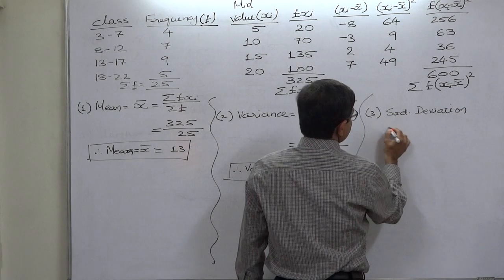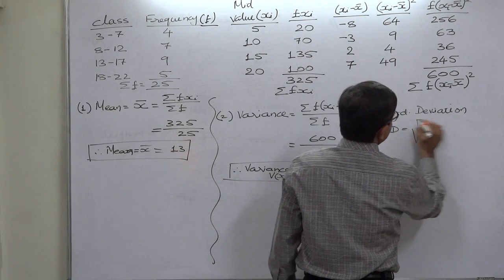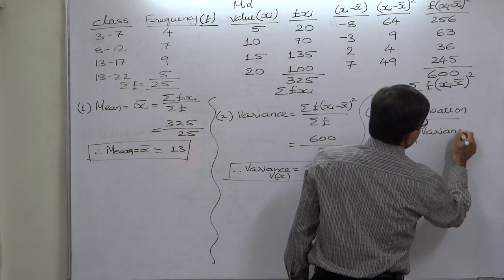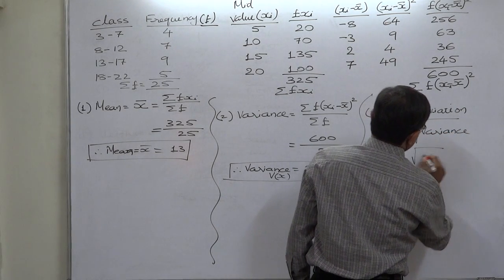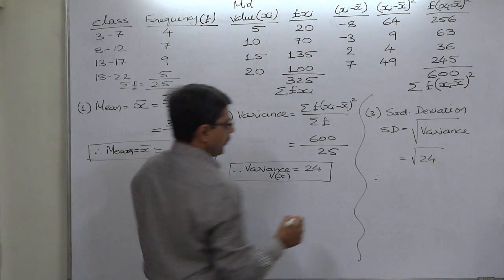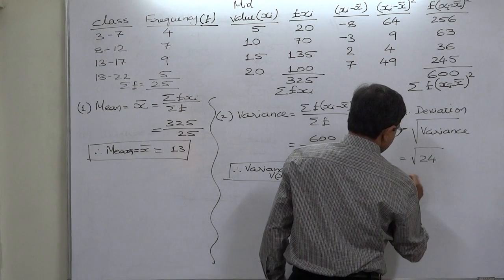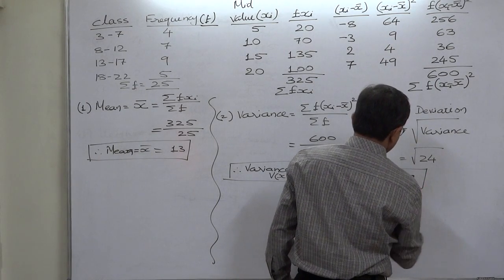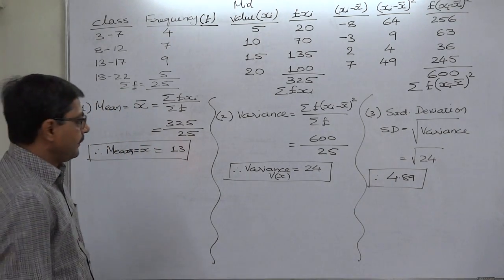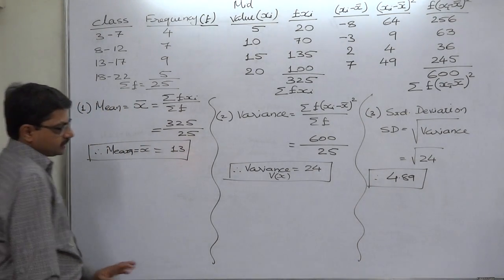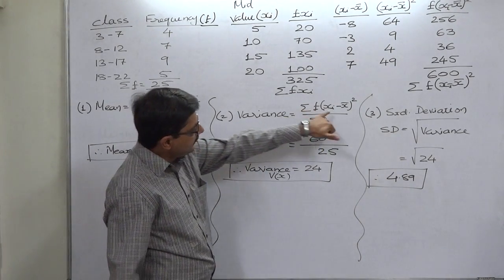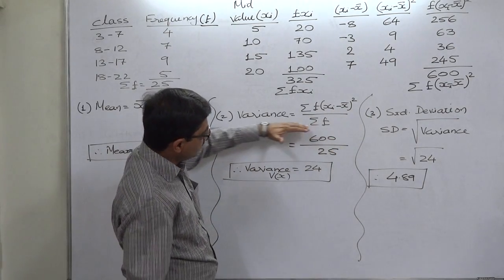And now we can calculate standard deviation. The standard deviation is the square root, or rather positive square root, of variance, which is 4.89.